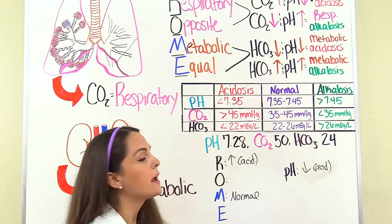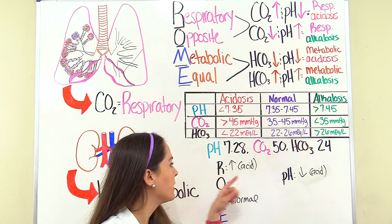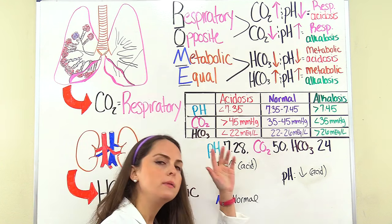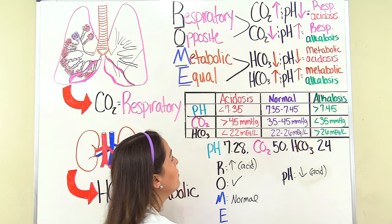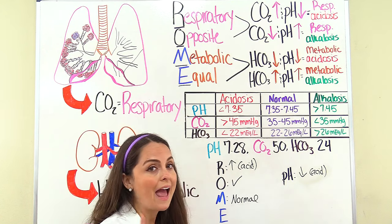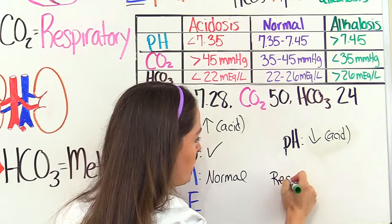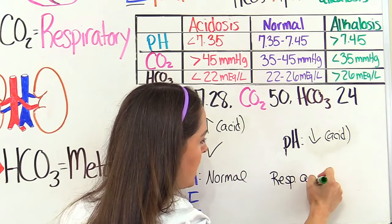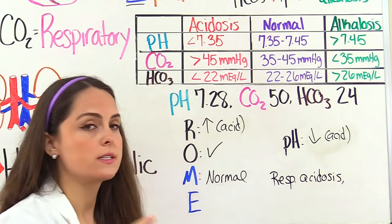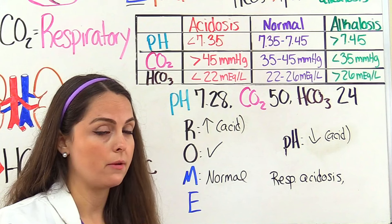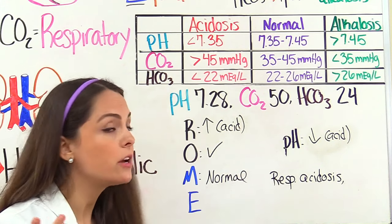Now let's apply ROME. We have opposites going on — respiratory is high, pH is low. So according to ROME, we have respiratory acidosis. We've answered our first two questions: we have a respiratory problem and we have acidosis.